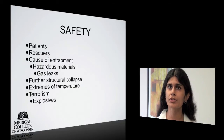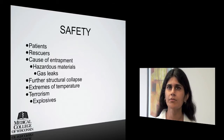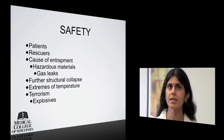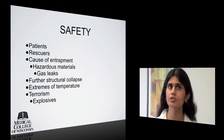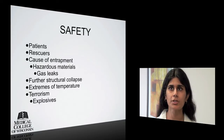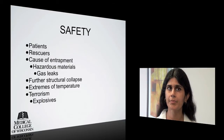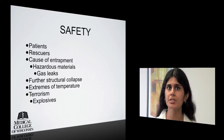Of utmost priority when called to the scene of a potential field amputation is safety — the safety of patients and rescuers. Safety involves knowing the cause of entrapment and potential hazards surrounding the scene, such as hazardous material like gas leaks, further structural collapse, or extremes of temperature. In addition, in this day and age, consideration for terrorism has to be a priority. Explosives need to be considered at every scene. Secondary explosives are those designed to specifically injure rescue workers and are set off only after rescuers have entered the scene.